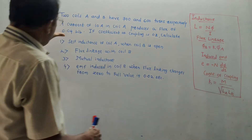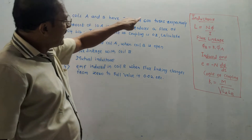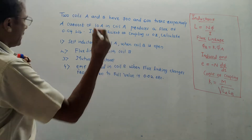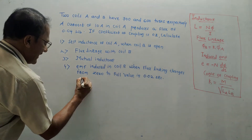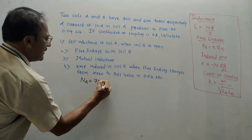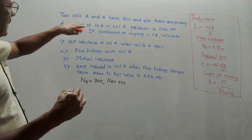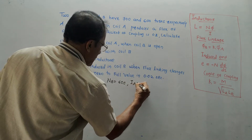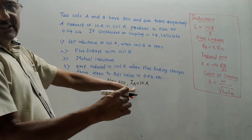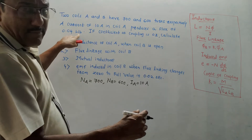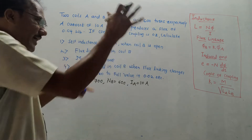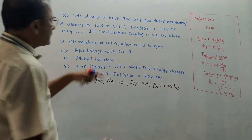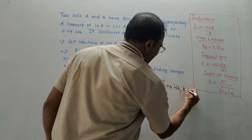Question: Two coils A and B have 700 and 600 turns respectively. So NA = 700, NB = 600. A current of 10 amperes in coil A — so IA = 10 A — produces a flux of 0.04 Webers, so phi_A = 0.04 Wb. The coefficient of coupling K = 0.2. Calculate: (1) self-inductance of coil A when coil B is open, (2) flux linkage with coil B, (3) mutual inductance, (4) EMF induced in coil B.